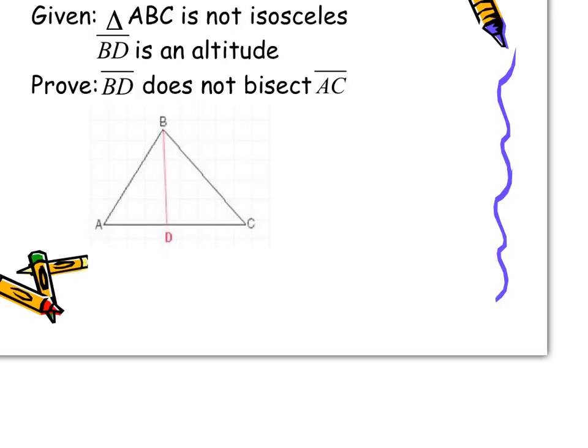In this first example, we're given that triangle ABC is not isosceles and we're given that BD is an altitude. So I know that BD is an altitude and ABC is not isosceles, meaning these two sides can't be congruent. My proof states that BD does not bisect AC. Right there I know this is a proof by contradiction, because it's wanting me to prove that something is not true.